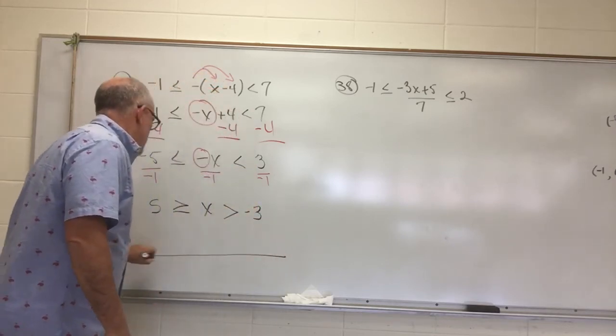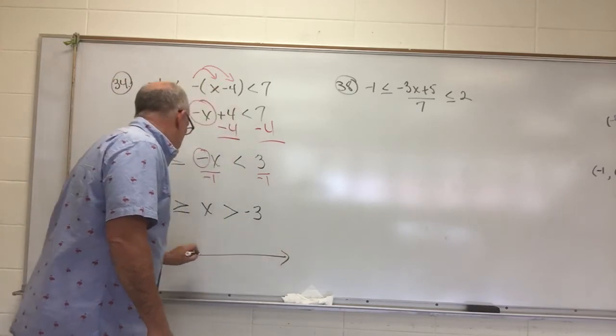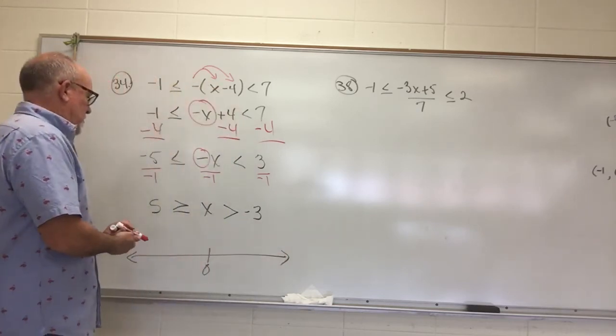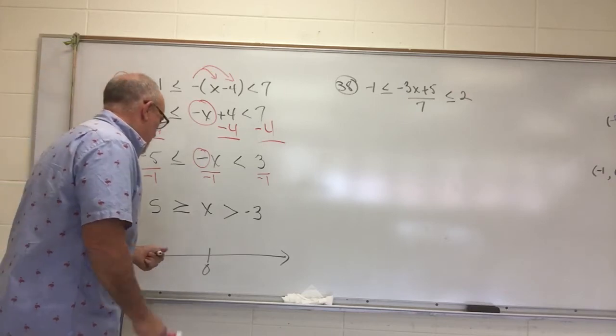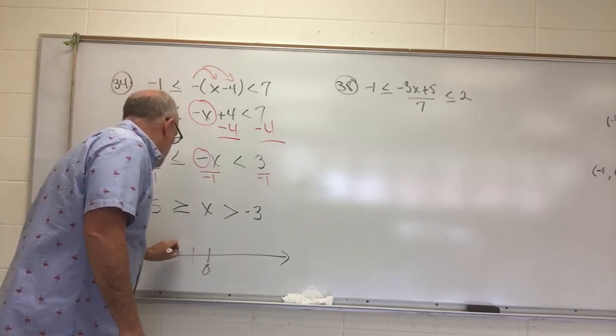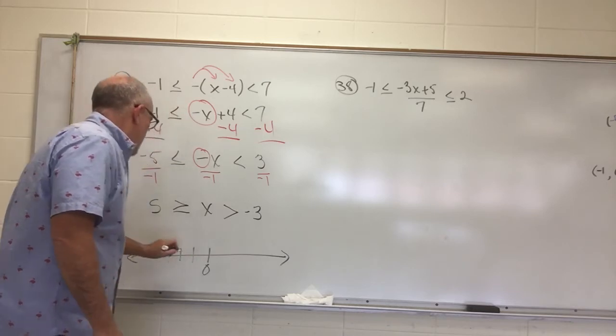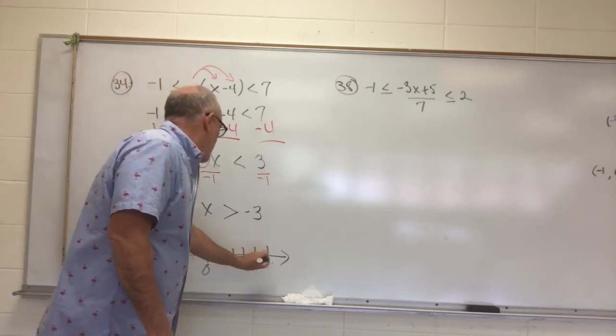So let's see how this one is going to sketch on our number line. Let's find 0. I'd like to know where 0 is. I've got a negative 3. I'm going to have to account for 1, 2, 3, and then a positive 5. 1, 2, 3, 4, 5.